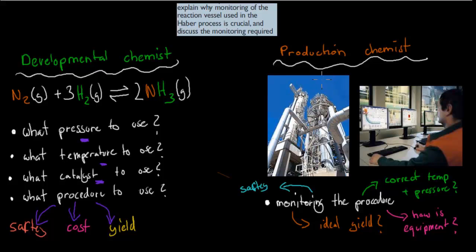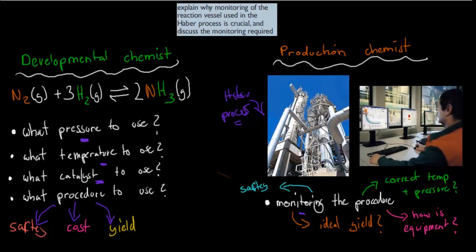The production chemist is the person who puts all these procedures into practice. He's going to be the one actually inside or close to the actual facilities — this is the Haber Process facility where all of this is being made, where the procedure is actually being put into practice. He's going to be monitoring. One of his main roles is monitoring: he'll be in front of a computer analyzing lots of data, and he might go around the facility to look at different parts, at the pipes, if they're broken or anything like that.